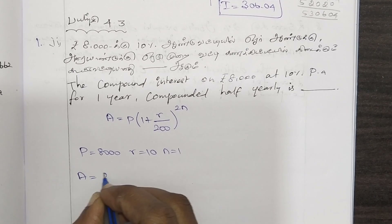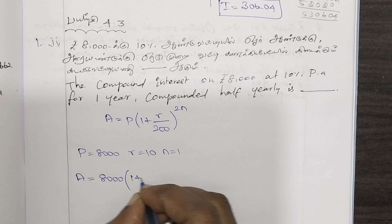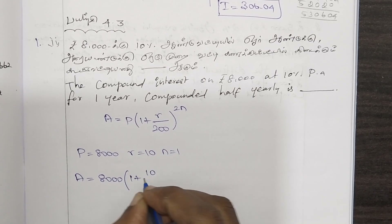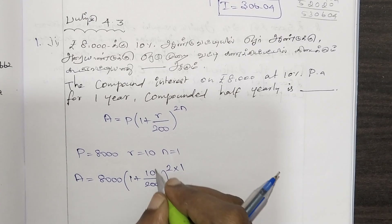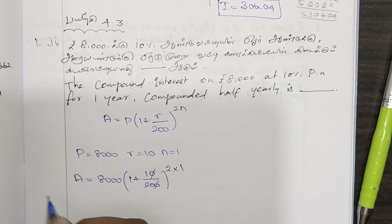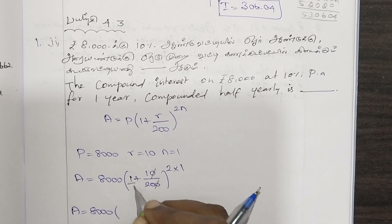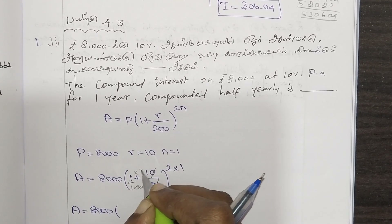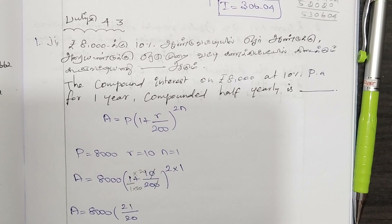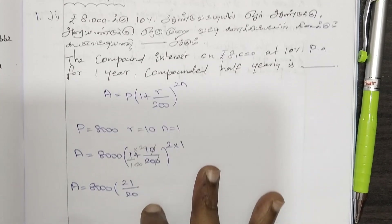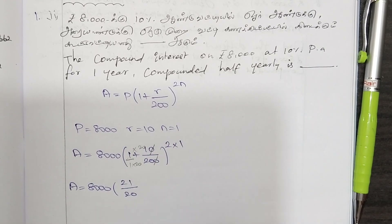Substituting: A equals 8000, because P is 8000. 1 plus r rate of interest, key is 10, and 200 at bottom. 10 and 10 cancel with 200 to give 20 at the bottom. So 1 plus 1 by 20 equals 21 by 20, whole power 2.